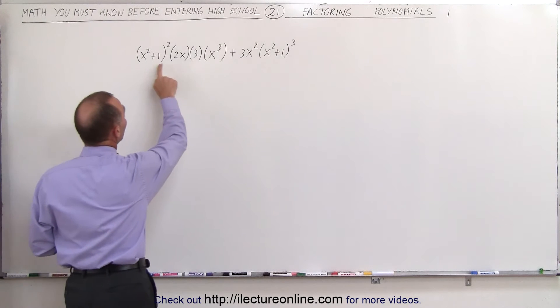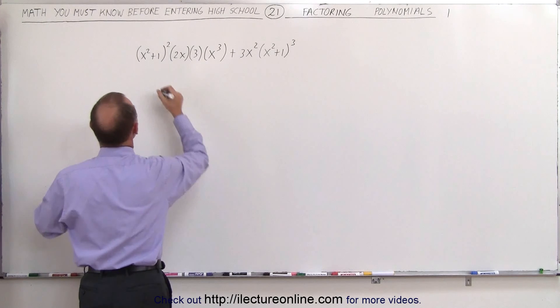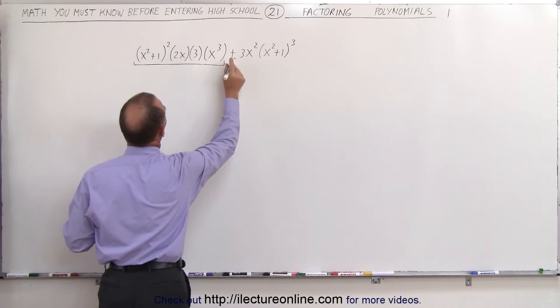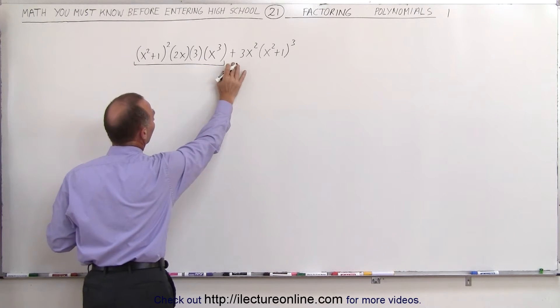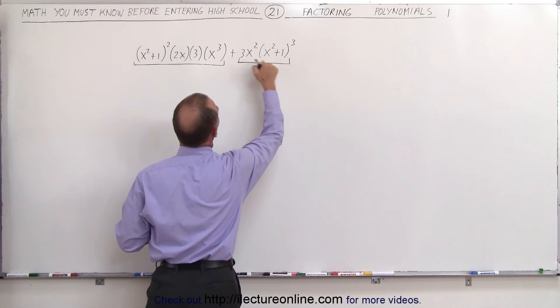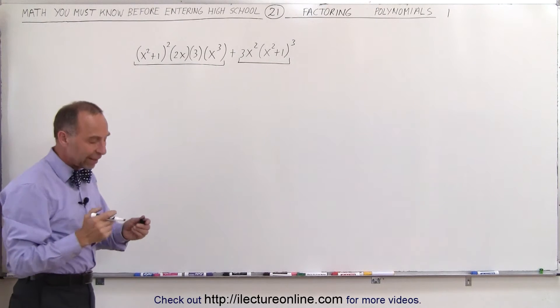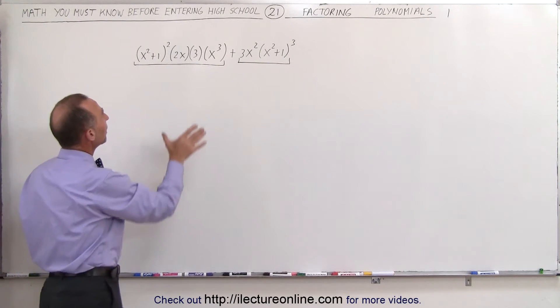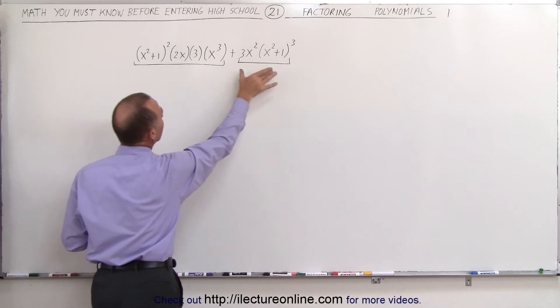Realizing that these are all multiplied together, this can be considered as a single term plus, separated with a plus from this where we have this multiplied times this. So basically what we're looking for is we're looking for common factors here and here.